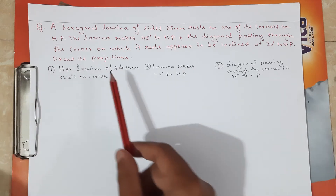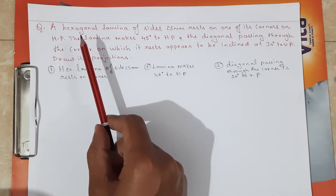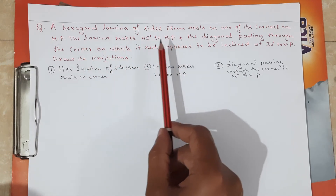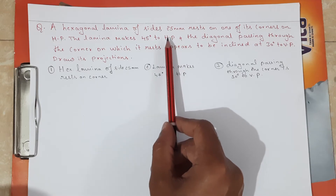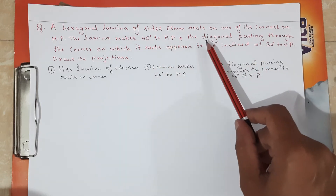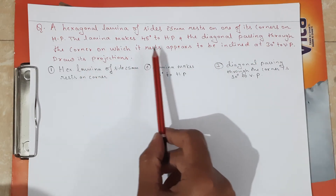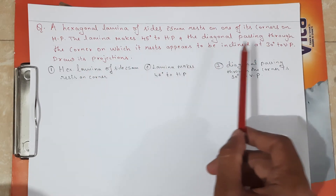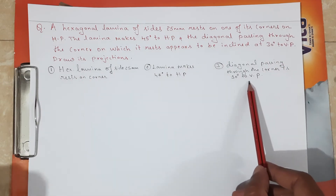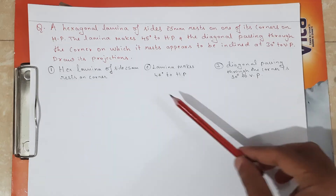The second data is the inclination with respect to HP — the lamina makes 45 degrees to HP. Next, the diagonal passing through the corner on which it rests appears to be inclined at 30 degrees to VP. This is the third condition required to draw the final step.